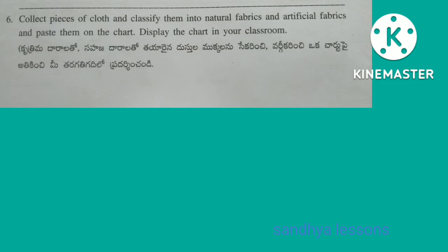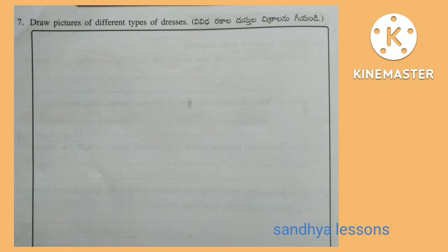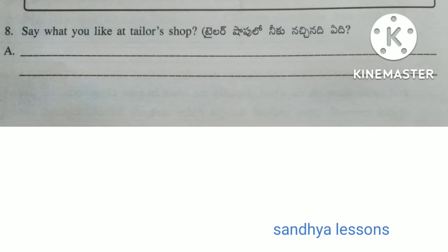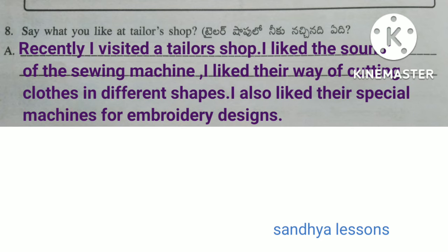Sixth question: Collect pieces of cloth, classify them into natural fabrics and artificial fabrics, and paste them on a chart. Display the chart in your classroom. Eighth question: Say what you like at a tailor's shop. Recently I visited a tailor's shop. I liked the sounds of the sewing machine. I liked their way of cutting clothes in different shapes. I also liked their special machines for embroidery designs.